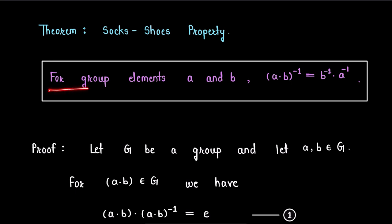Statement of the theorem is: for group elements a and b, we have (a·b)^(-1) is equal to b^(-1)·a^(-1).